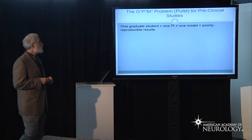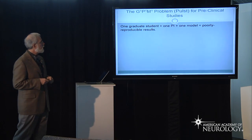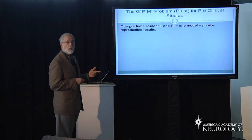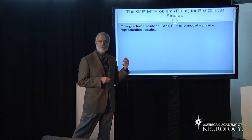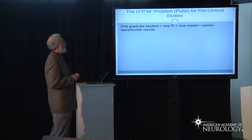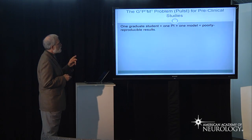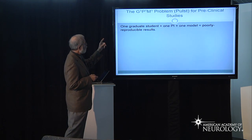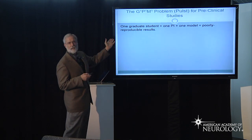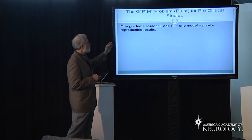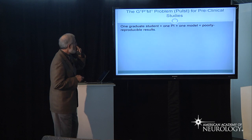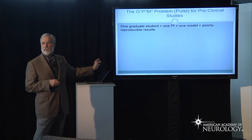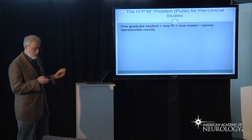Stefan Polst has put forth the G1, P1, M1 problem — that's one graduate student, one problem, and one model. If you apply that to preclinical studies, where one trainee, one PI, and one model are involved, that results in poorly reproducible results beyond the statistical concerns already presented.